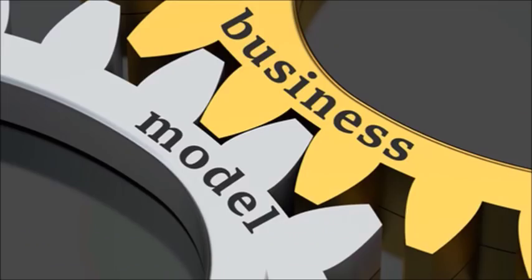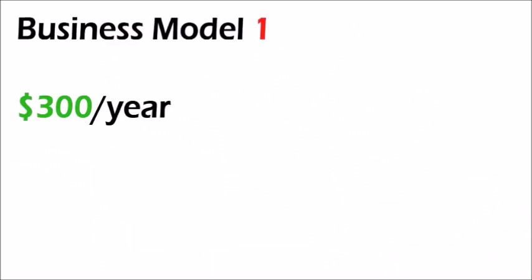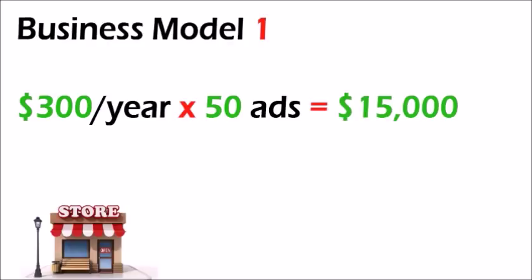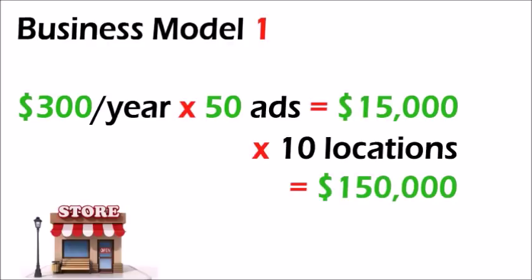Here are the two different business models. Business Model 1: Let's say, for example, you charge $300 per year for one location and you sell 50 ads per location. Your net income would be 50 ads times $300 per ad, equals $15,000 per screen location, multiplied by 10 locations, equals $150,000 per year in revenue.